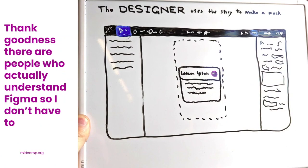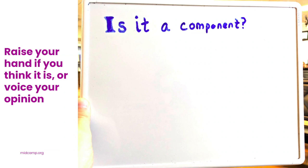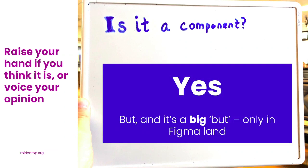This is something that looks like an accordion. It could be prototyped to open and close on click, and it could be placed in the context of other mocked-up content components. Is it a component? There are a lot of 'yes' votes coming out here.